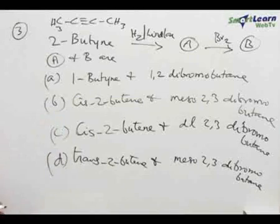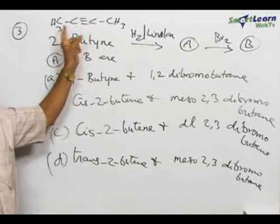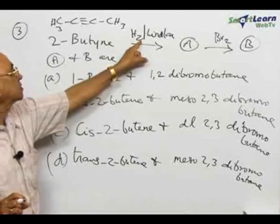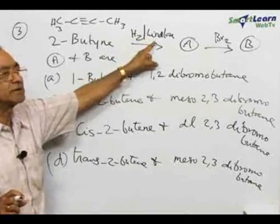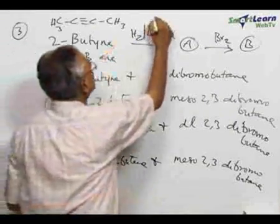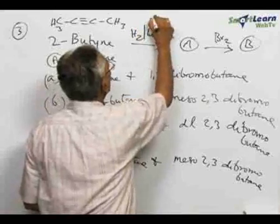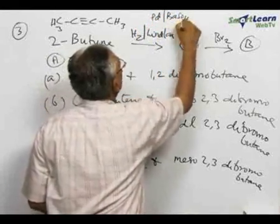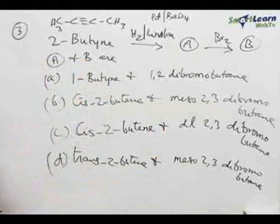This is 2-butyne. 2-butyne can be reduced selectively by means of one catalyst which is known as Lindler catalyst, that is hydrogenation in the presence of Lindler catalyst. Lindler catalyst is actually hydrogen over palladium and barium sulphate as a catalyst.